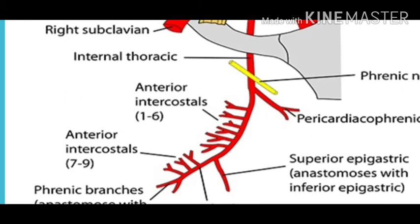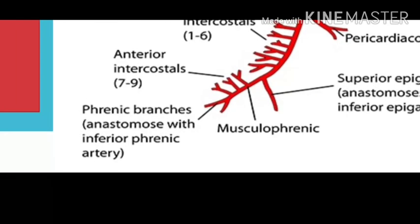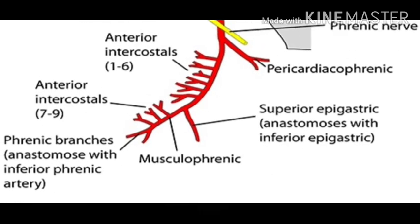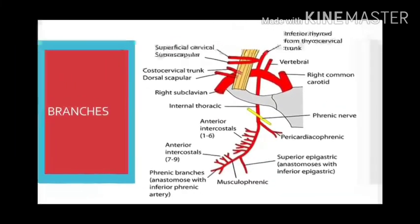The perforating branches accompany the anterior cutaneous nerve. In the female, the perforating branches in the second, third, and fourth spaces are large and supply the breast. The artery also runs downward past the seventh costal cartilage, entering the rectus sheath by passing between the external and costal slips of the diaphragm. The musculophrenic artery runs downward and laterally behind the seventh, eighth, and ninth costal cartilages, gives two anterior intercostal branches to each of these three spaces, perforates the diaphragm near the ninth costal cartilage, and terminates by anastomosing with other arteries on the under surface of the diaphragm.